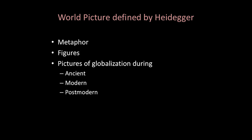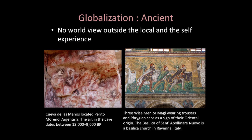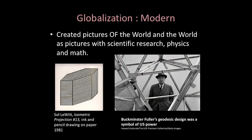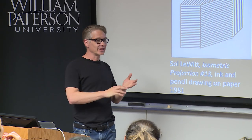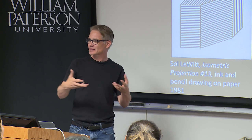World pictures, as defined by Heidegger, are metaphors and figures of globalization during ancient, modern, and postmodern times. In the ancient period, the world view outside the local and the self — there was no real view; it was very local. In the modern period, globalization created pictures of the world through scientific research, physics, and math — it was about finding an answer. Postmodernists stopped thinking about answers and started dissecting power and meaning. Metamodernists try to pick those pieces up and go forward with a new narrative.